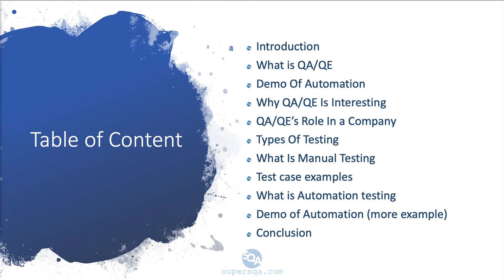Let's take a look at the table of contents. We're going through the introduction right now. We're going to talk about what is QA and QE, we're going to see a quick demo of automation, and we'll discuss why I think QA and QE is so interesting — a lot of that will be my opinion based on personal experience. We'll also cover what the role in a company looks like, how your day looks as a QA, and the different types of software testing so you can decide which type suits you.